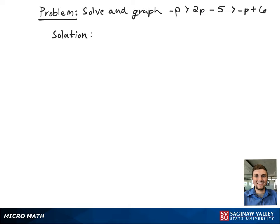Here we have the compound inequality: negative p is greater than 2p minus 5 is greater than negative p plus 6.